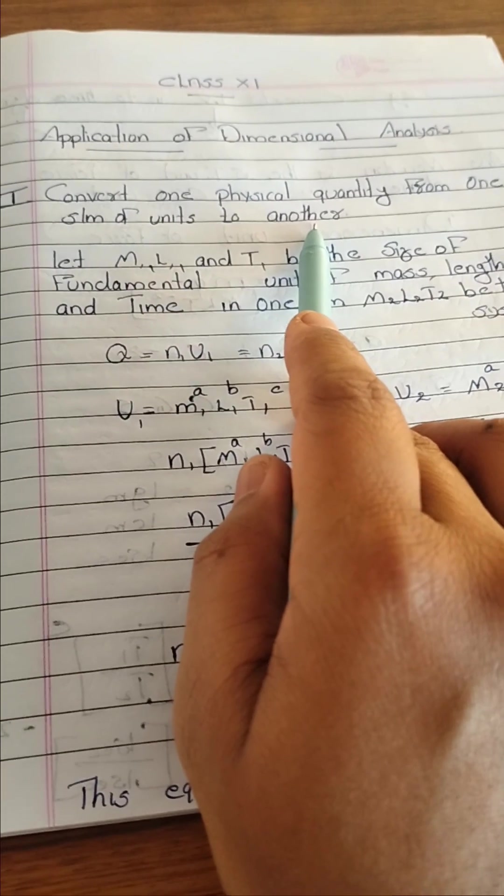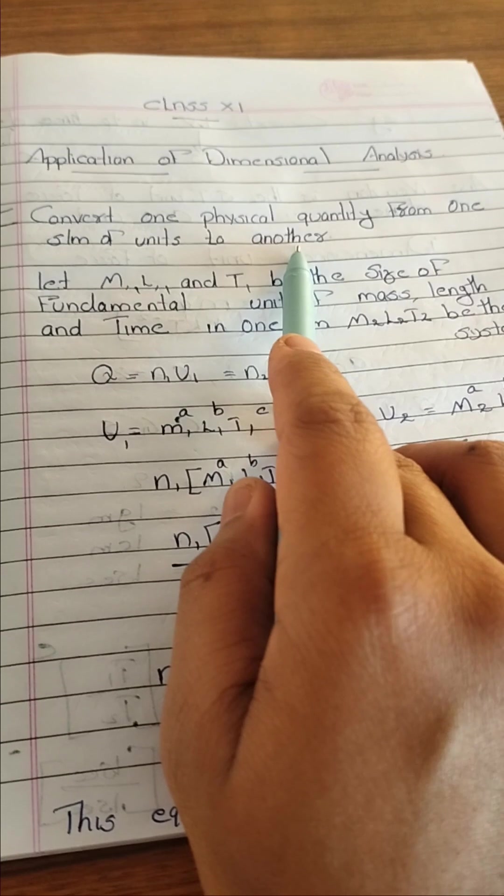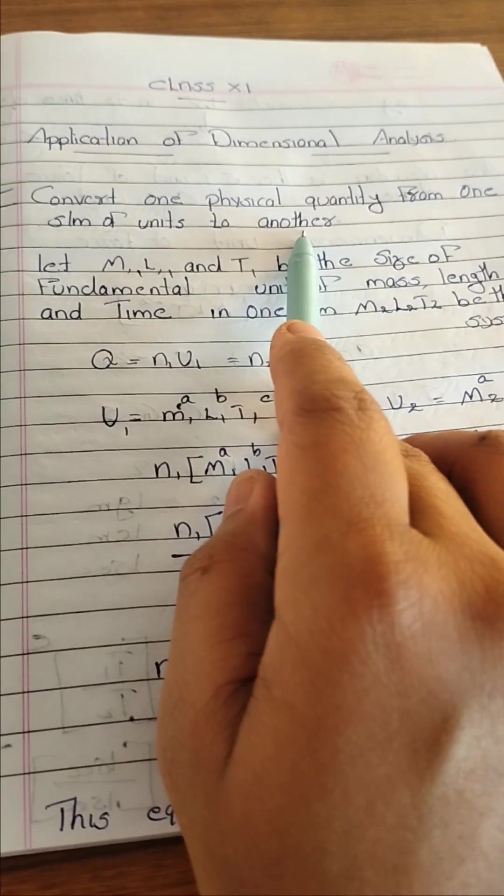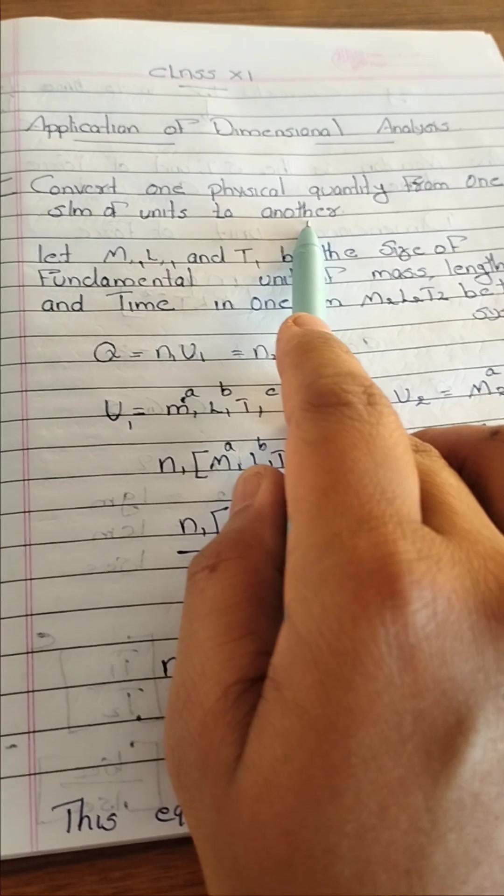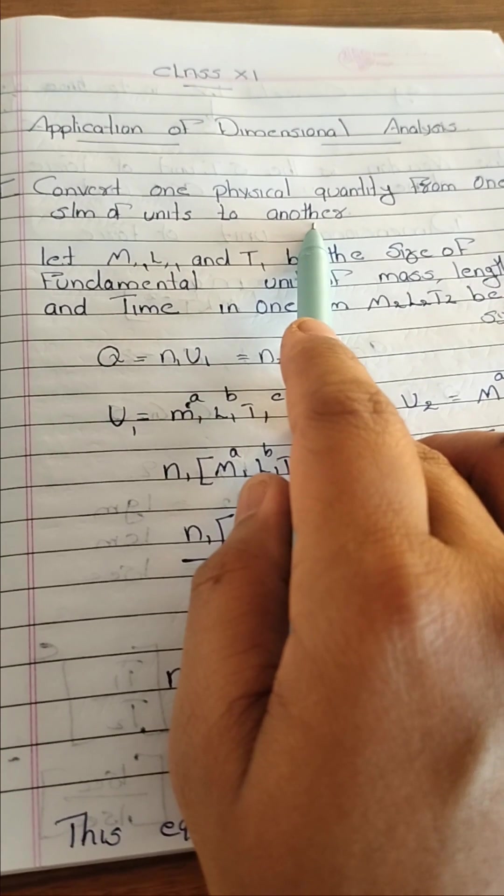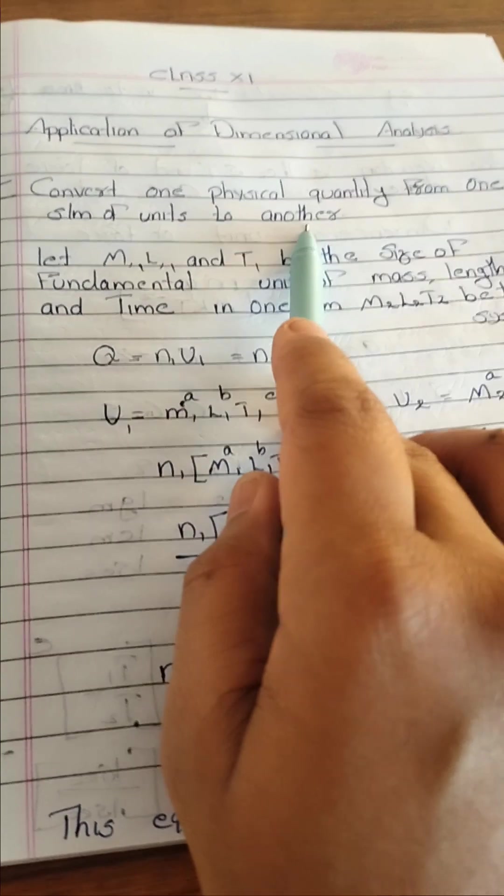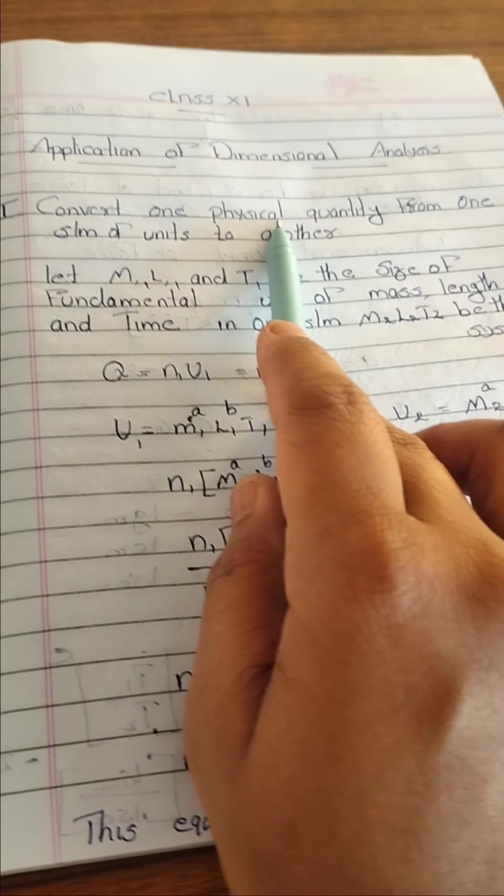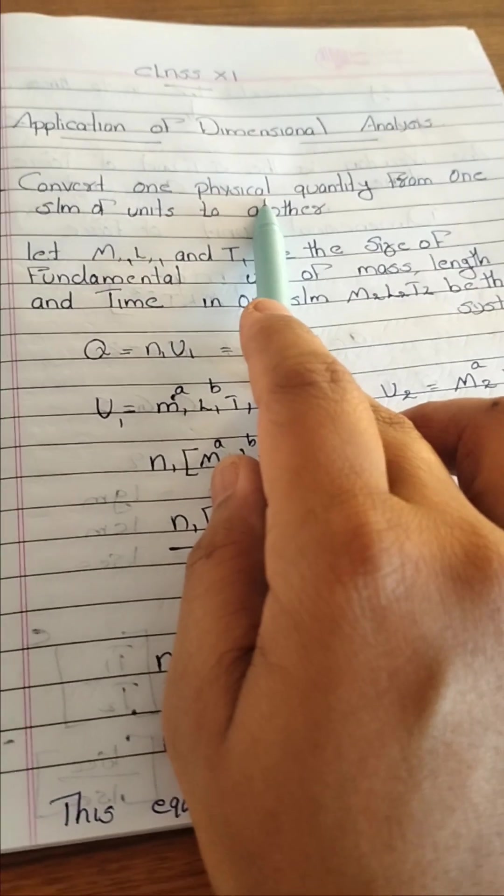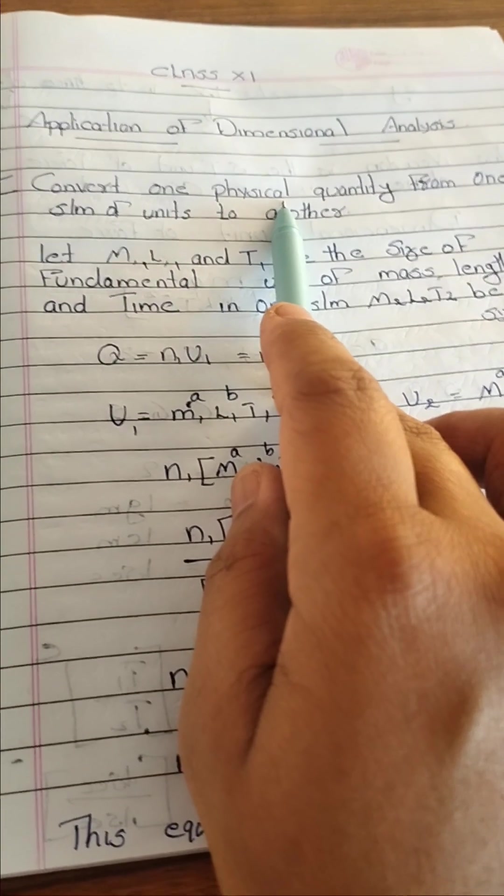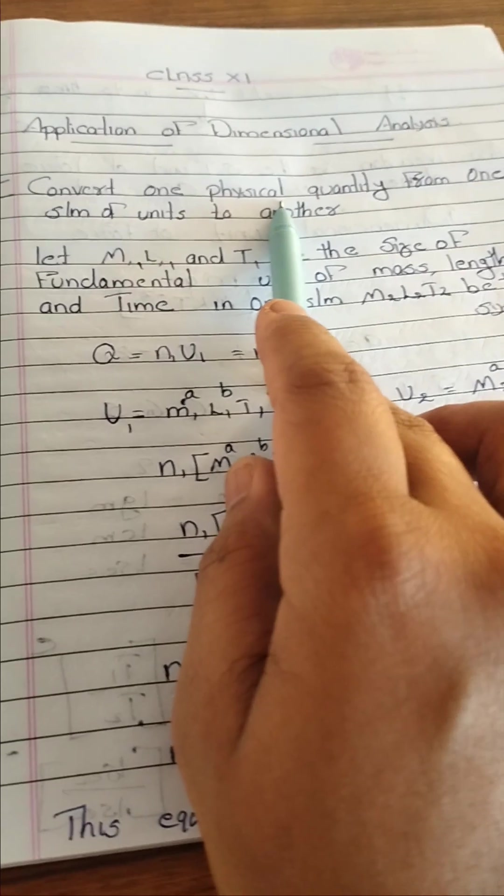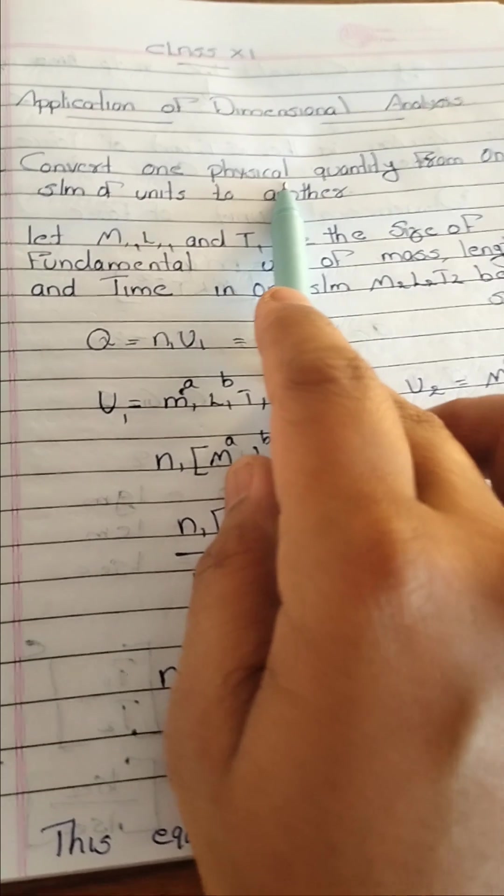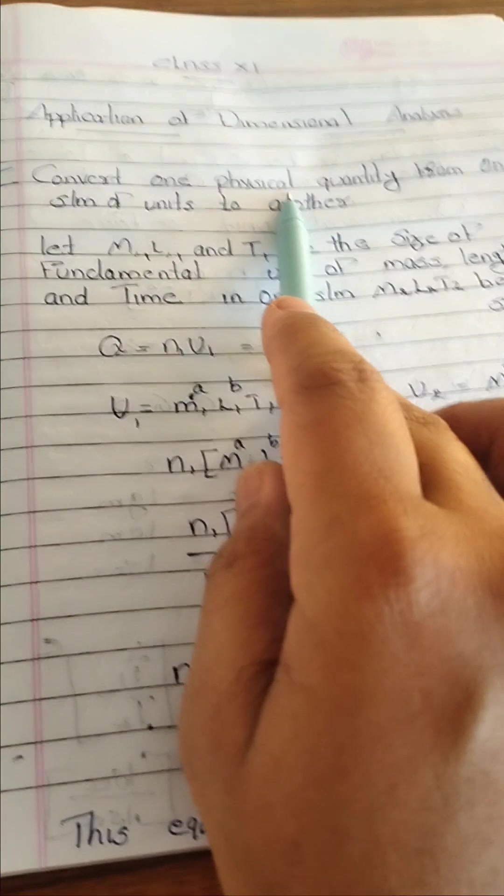Application of dimensional analysis means what are the uses of dimensional analysis. So different types of uses are available in the case of dimensional analysis. The first application is convert one physical quantity from one system of units to another. We already studied in the smaller classes, different physical quantities have different methods of system of units. What are the different system of units? For example, SI unit, CGS unit, MKS unit, FPS unit, something like that.